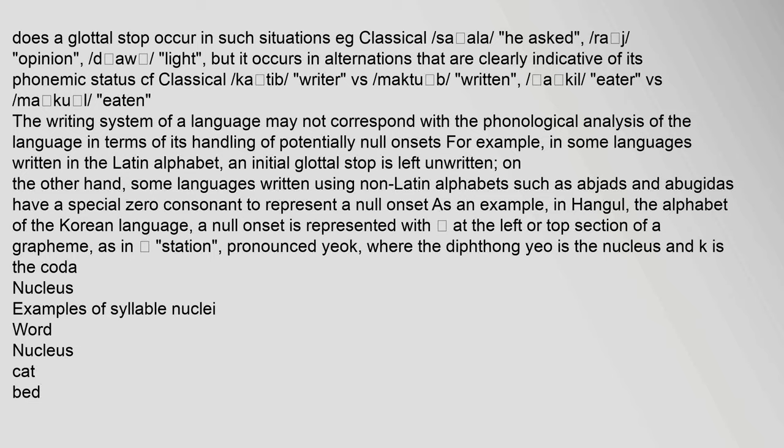The writing system of a language may not correspond with the phonological analysis in terms of its handling of potentially null onsets. In some languages written in the Latin alphabet, an initial glottal stop is left unwritten. Some languages written using non-Latin alphabets such as abjads and abugidas have a special zero consonant to represent a null onset. In Hangul, the alphabet of the Korean language, a null onset is represented with a special symbol at the left or top section of a grapheme.